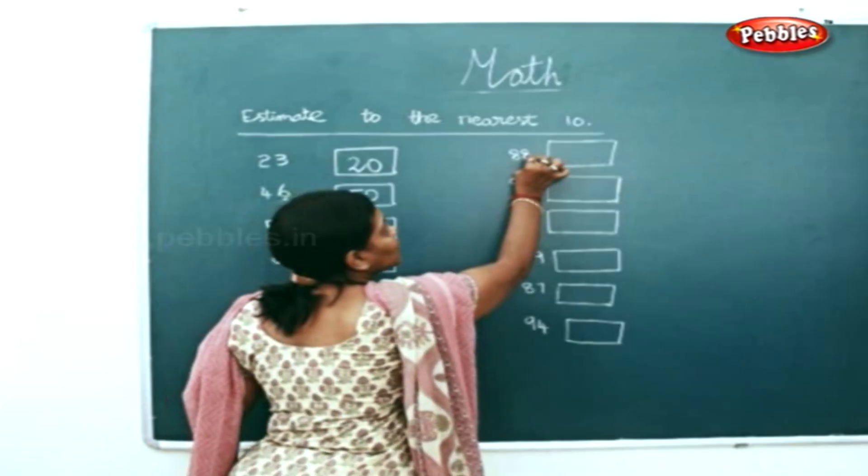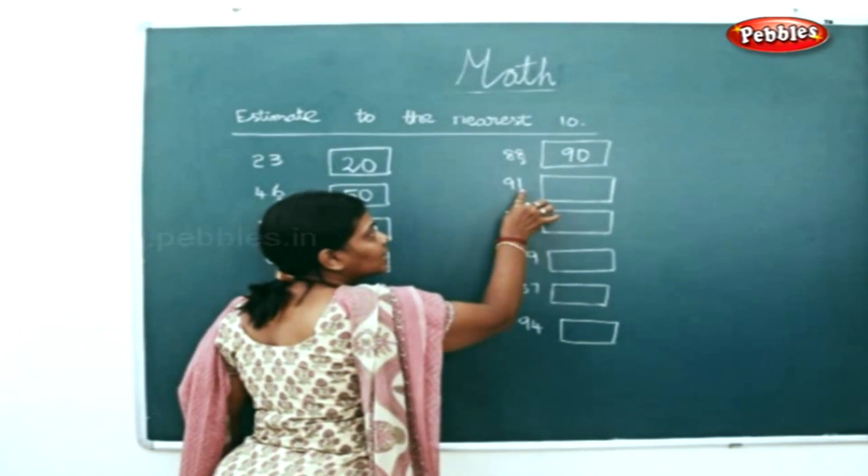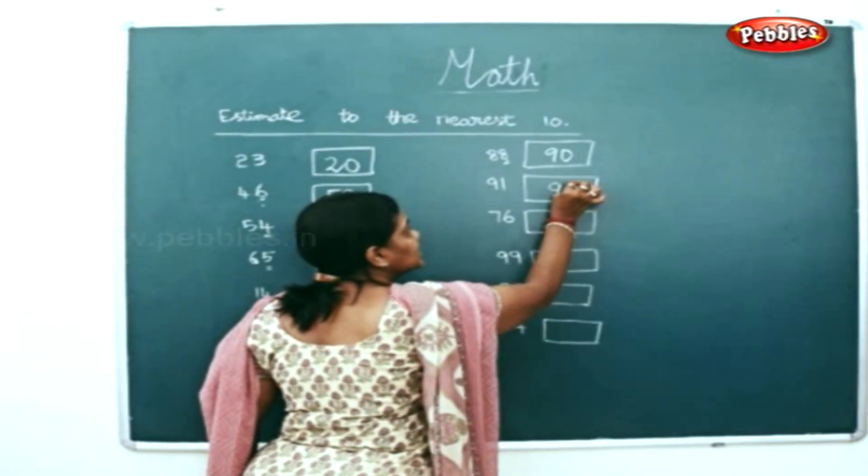88. So 8, we will write 90. 91 - the nearest closest number is 90 in tens.